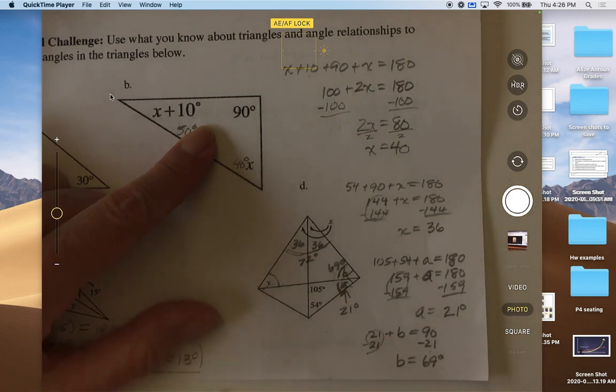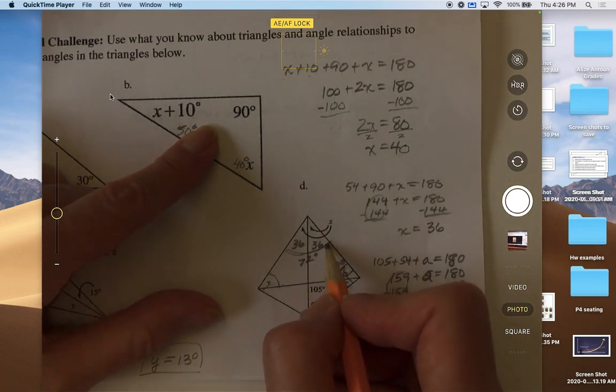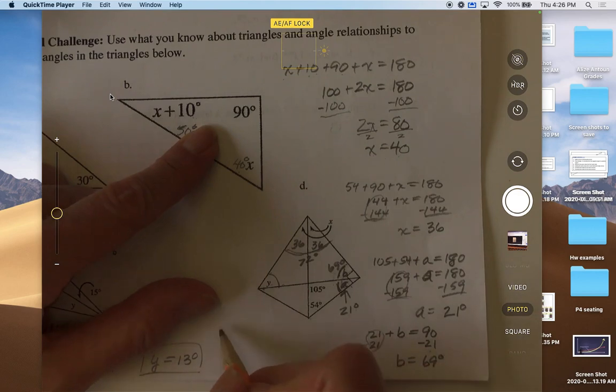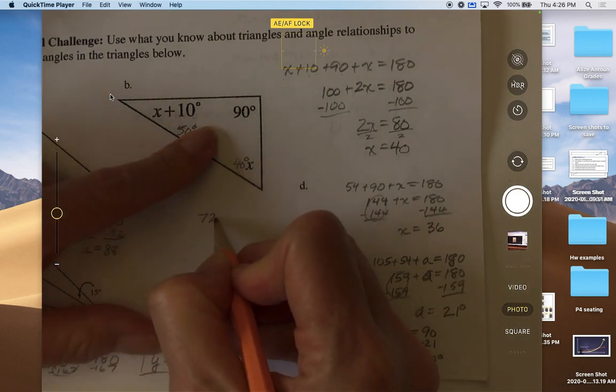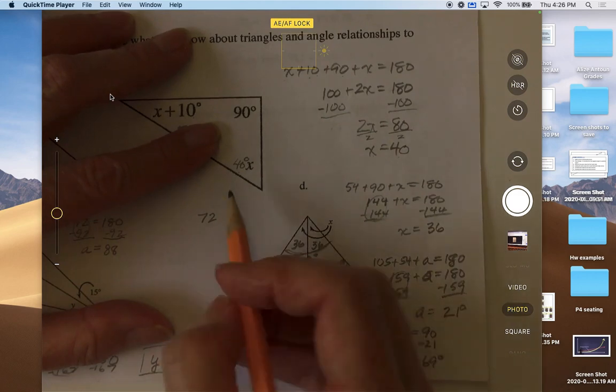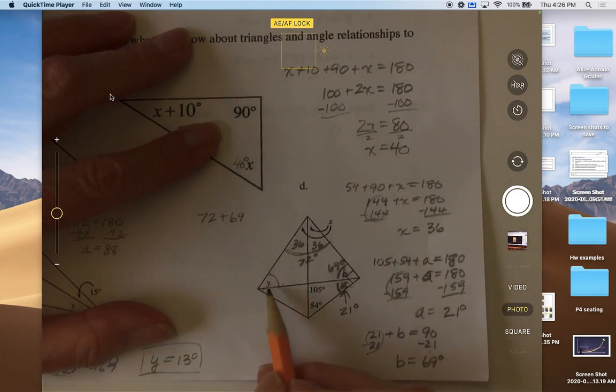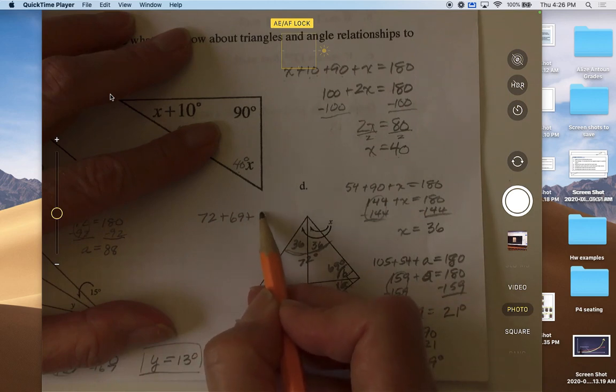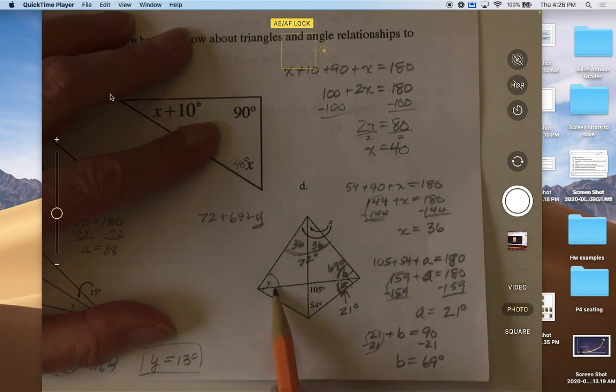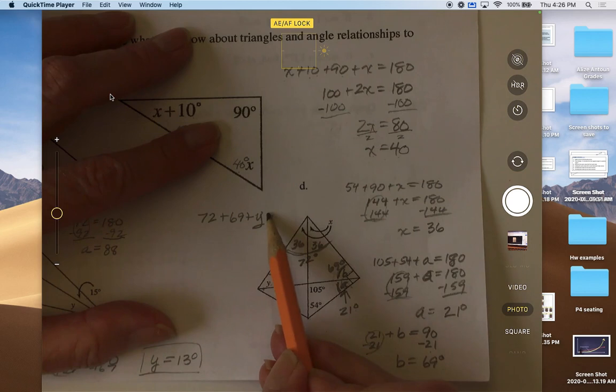Now we can figure out what y is. So we would take this and make that 72 plus 69, and then plus y, which is our unknown right down here, and they're all equal to 180.